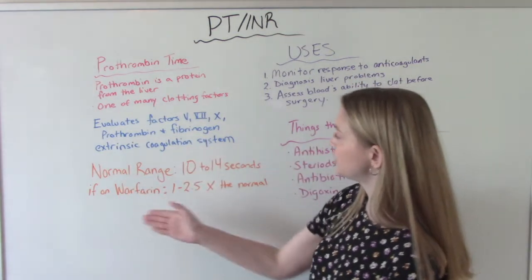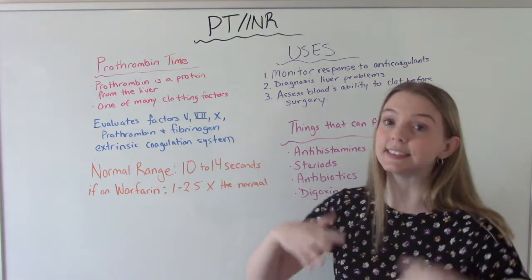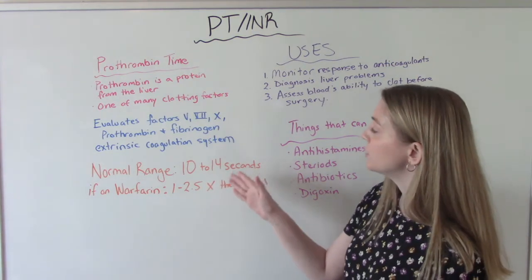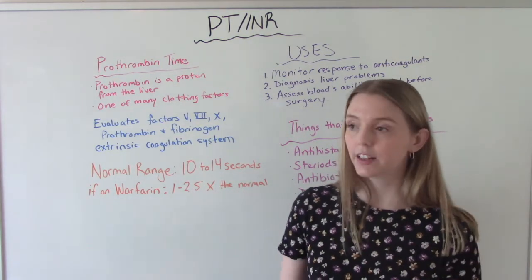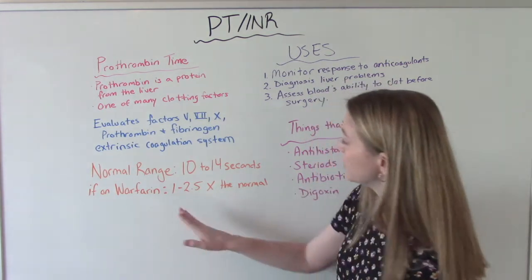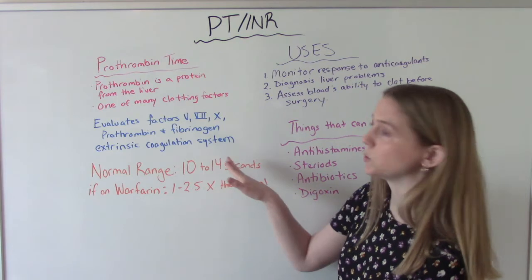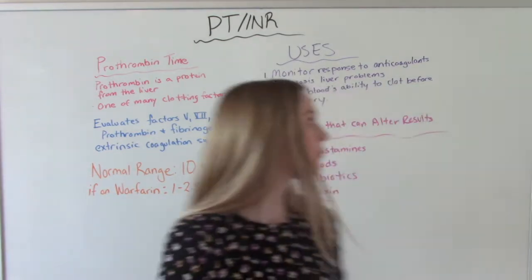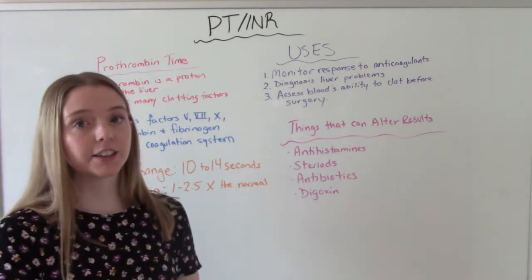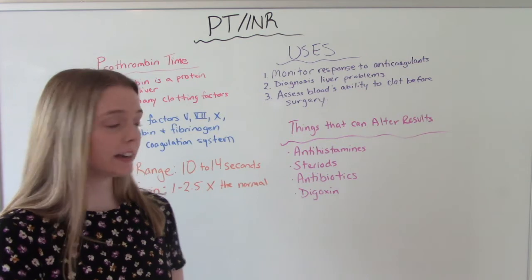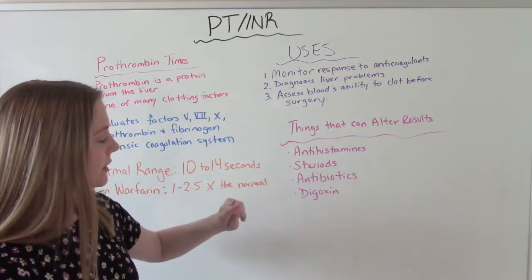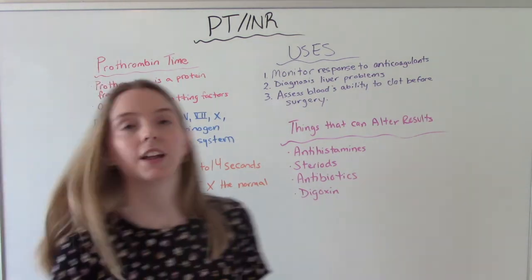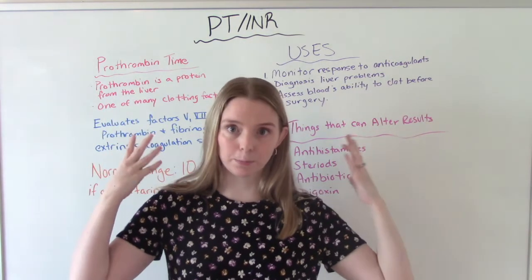The normal range — the normal value you will see on a patient who is not on any sort of medication — is 10 to 14 seconds. So it takes 10 to 14 seconds for your blood to clot. If you are on warfarin, it will take one to two and a half times this normal, so it takes longer to clot because you're on that anticoagulant. Things that could potentially alter the results of the PT include antihistamines, steroids, certain antibiotics, and digoxin.